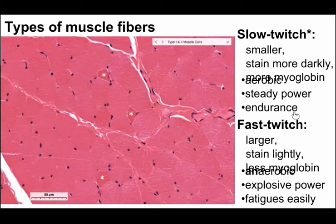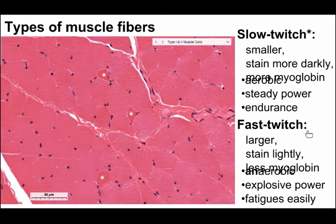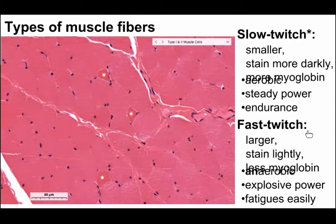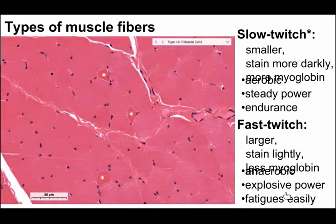Fast twitch muscle fibers — like chicken breast — are larger and stain more lightly because they have less myoglobin. They're really good for sudden bursts of power. Another way to conceptualize this distinction is to think about human athletes: endurance athletes and marathon runners tend to naturally have a lot of slow twitch muscle, while incredible sprinters tend to naturally have a lot of fast twitch muscle. Fast twitch muscle fatigues easily, but you can generate a ferocious amount of force over a short period of time.